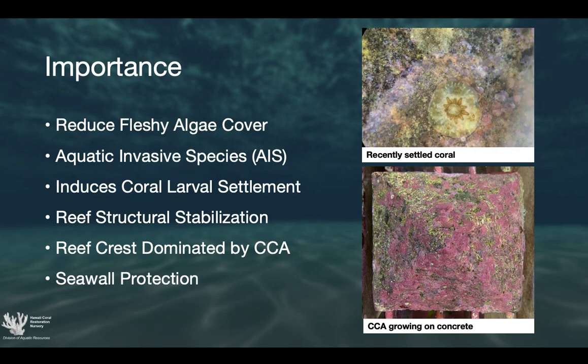So why might you be interested in growing crustose coralline algae? We know that it reduces fleshy algae cover and aquatic invasive species. It induces coral larvae settlement — as you can see in the upper right hand corner there's a single polyp right next to some crustose coralline algae. We've all heard that it's the glue of the reef, so it consolidates unconsolidated rubble and helps to stabilize the structure of the reef. The reef crest tends to be dominated by CCA because it can handle extremely high wave energy.